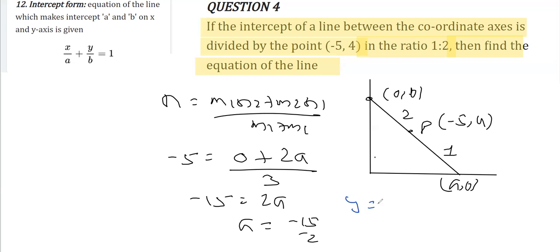The same way we can obtain the value of y: y = (m1·y2, that is 0, plus m2·y1, that is b) over (m1 + m2). And y is given as 4, so 4 = b/3, which means b = 12.